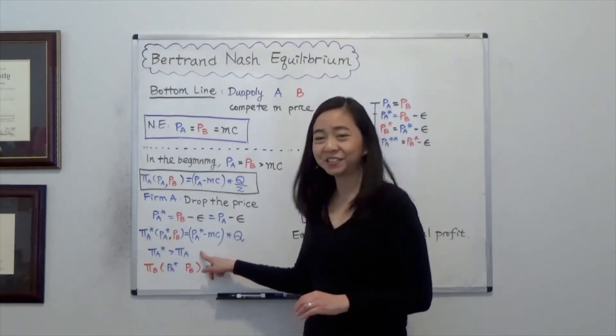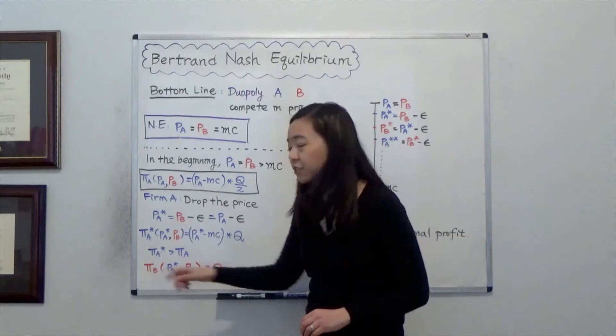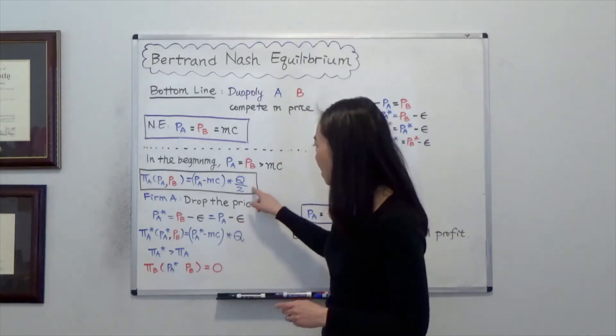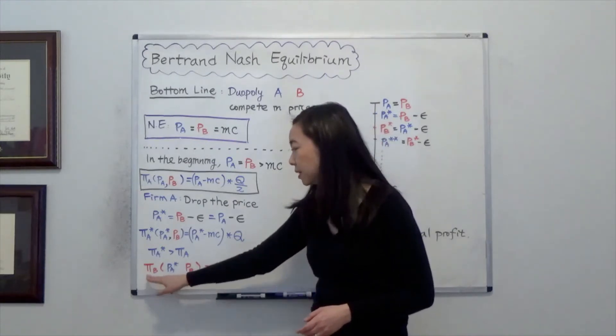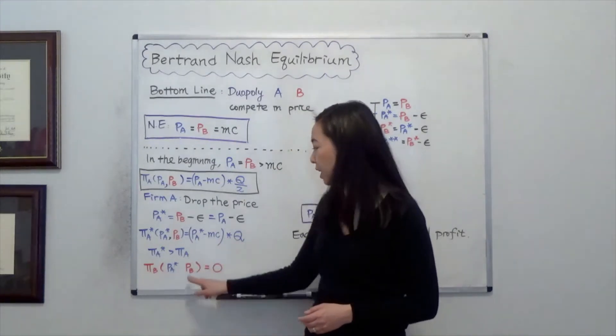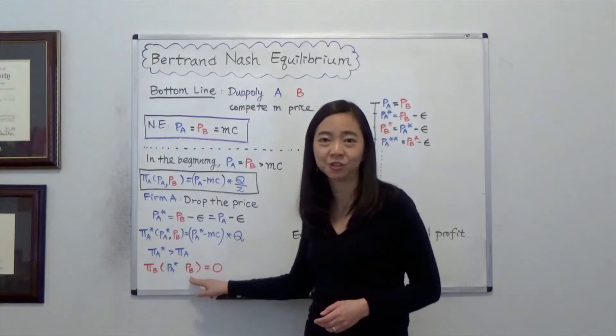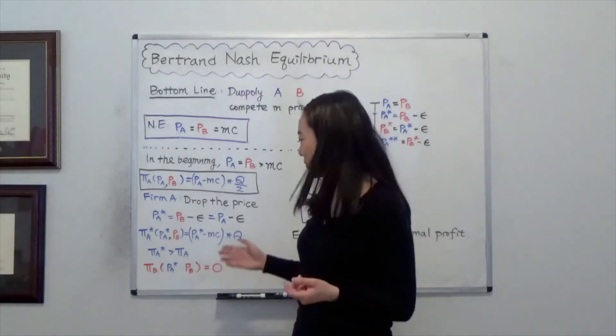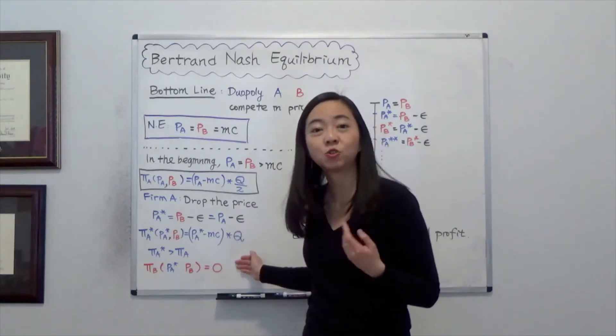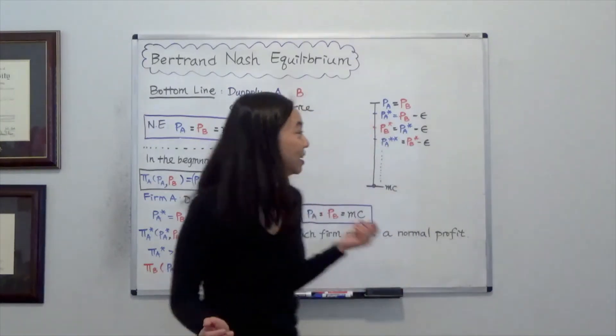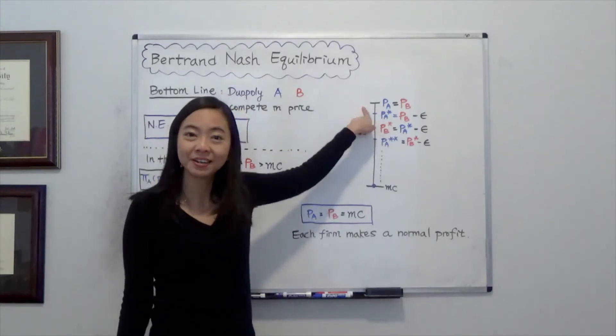Now in this case, firm B is going to lose the entire market because firm A grabs the entire market here. So πB, the new πB will equal zero given that firm B does not change its price. Now we know that firm B is not going to just sit there and be beaten up. It is going to find a strategy to compete with firm A.